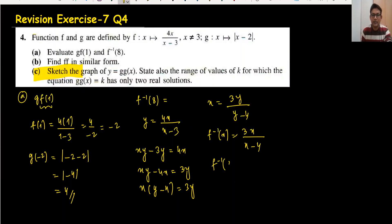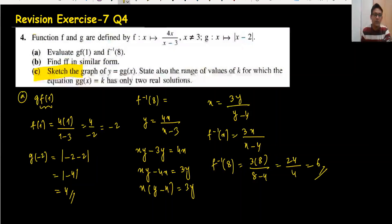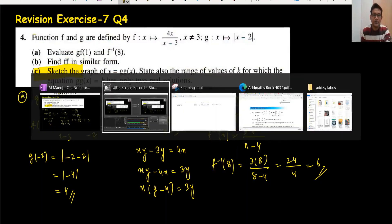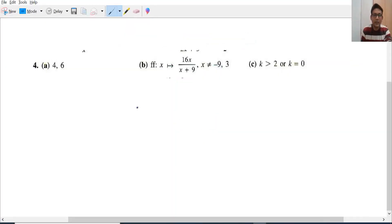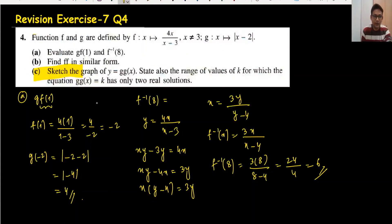Substituting 8: f⁻¹(8) = 3 times 8 divided by 8 minus 4, which is 24 divided by 4, giving 6. Checking our answers: the first part gives 4 and this gives 6.